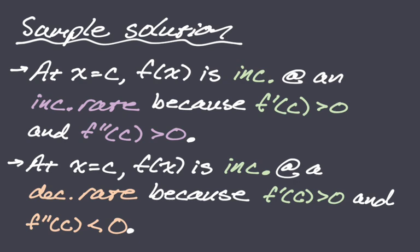So these are our possibilities when a function is increasing. We can be increasing — meaning f prime is positive — at an increasing rate, which means f double prime is positive. Or our function could be increasing — f prime is positive — at a decreasing rate, meaning f double prime is less than zero.